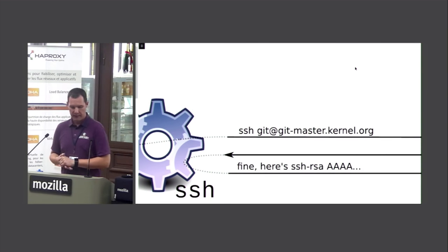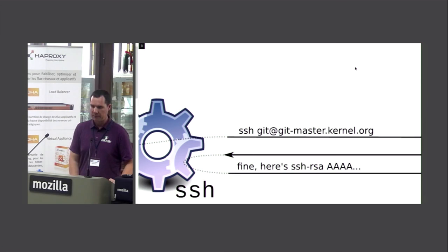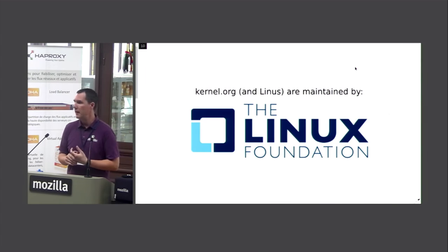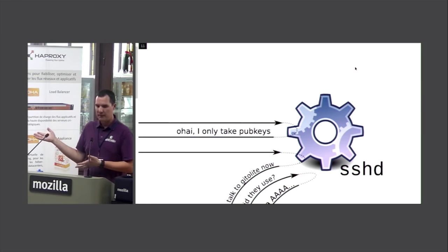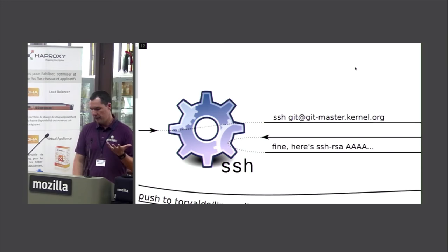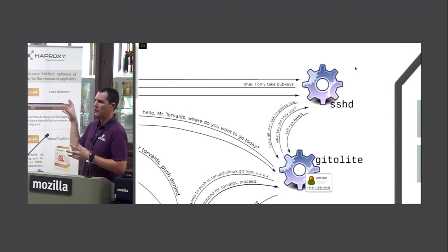Git first runs ssh git@git-master.kernel.org, which connects to the git master — a server located in Portland, Oregon, maintained by the Linux Foundation for about seven years. SSH connection is made to sshd at git.master.kernel.org. We only accept public keys as the authentication mechanism. Once authentication succeeds as the git user, the connection is passed to a subsystem called gitolite.